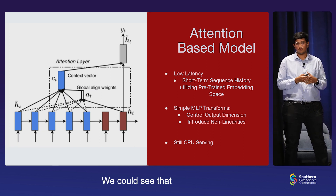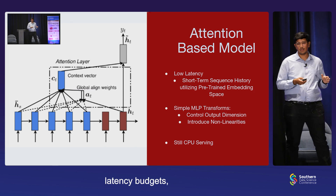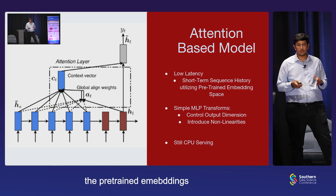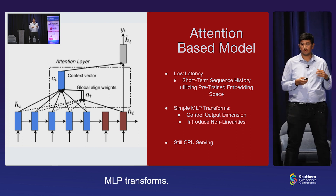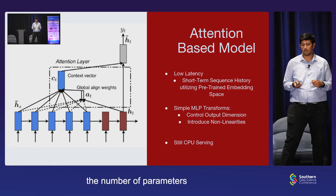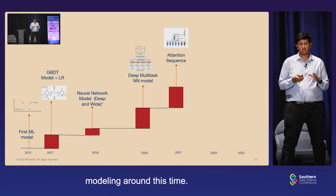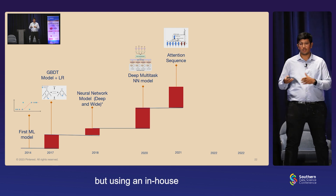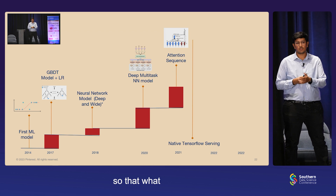By bringing this attention-based model, we could capture the sequence in the PinSage space to keep the model low latency, since we have very tight latency budgets. We are restricted to use only short-term sequences at this point because expanding our sequences increases cost. We utilize pre-trained embeddings coming from a different system to converge this model faster. On top of it, to learn non-linearities, we introduce simple MLP transforms, which not only give non-linearities but also allow us to control our output dimension and the number of parameters. At this point, Pinterest is still using CPU to serve models. We started doing journey modeling; around this time we also realized the power that the user's journey brings to the platform. But Pinterest was training in TensorFlow using an in-house C++ solution for training, which limited our ability to go to more complex architectures. So at this point, Pinterest also moved to native serving so that whatever we train on is whatever we serve with.